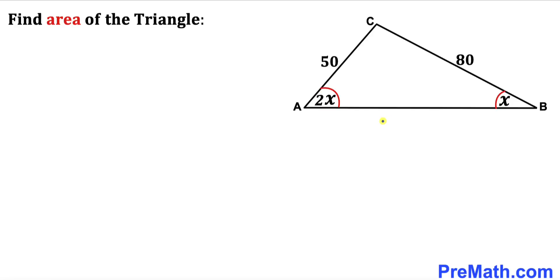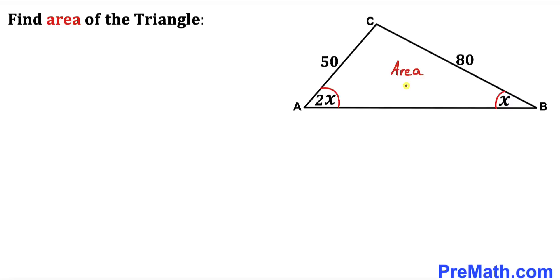Welcome to pre-math. In this video we have got triangle ABC such that side AC is 50 units, side BC is 80 units, angle ABC is x, and angle BAC is 2 times x. We are going to calculate the area of this triangle ABC.